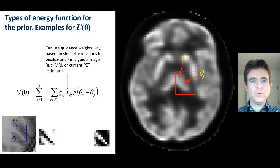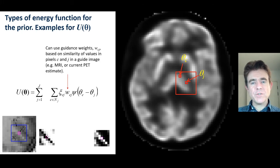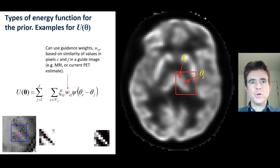We then take the negative of this and then the exponential, to end up effectively using a Gaussian kernel to deliver a similarity map.